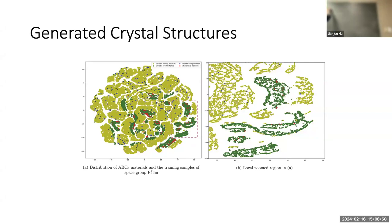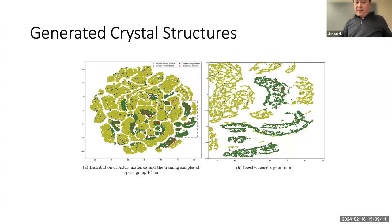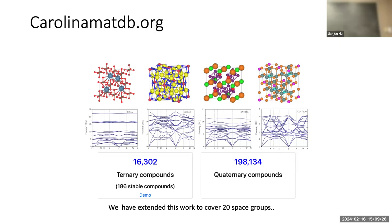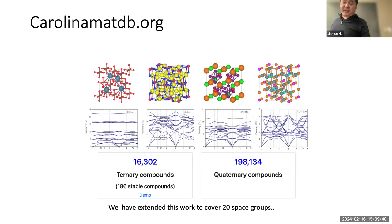We found some totally brand new types of stable materials - for example, a formula type like A7B2 - that has no single existing case in the training data. This database now has 220,000 entries. We already see many researchers from other universities crawling our structures to find interesting materials and publishing papers. Many top universities access the website regularly.